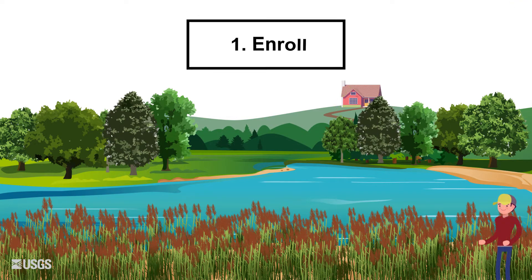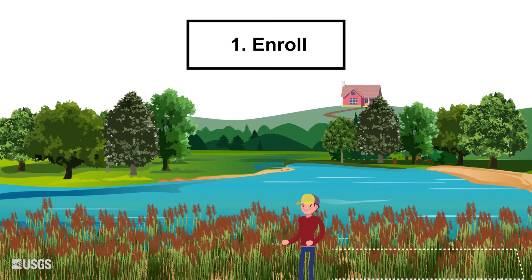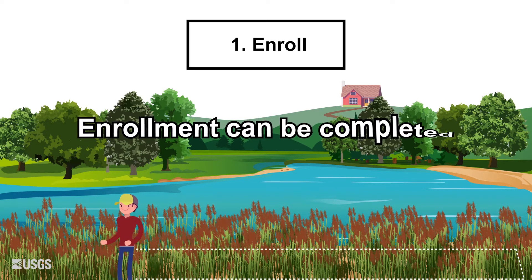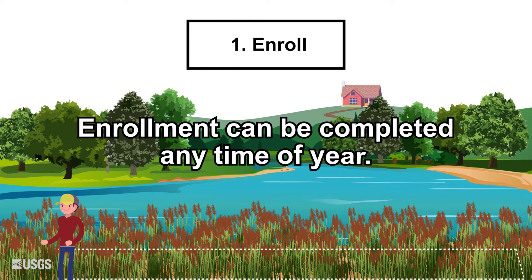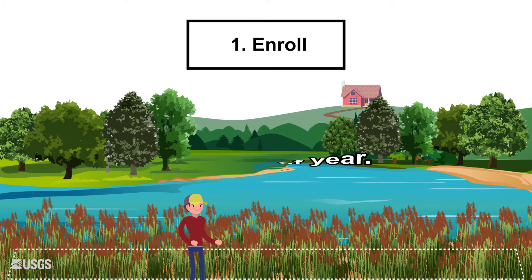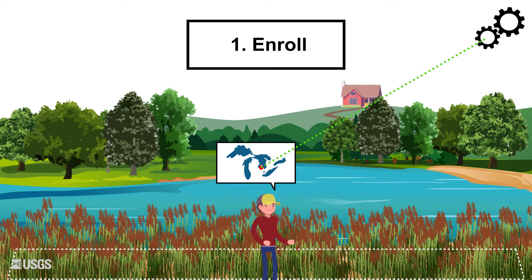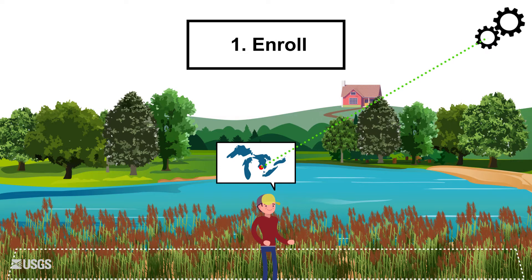First, you will enroll management units — the areas in which you will monitor and manage Phragmites. Enrollment can be completed any time of year by mapping the area to be managed and answering a few questions on the Web Hub. Each management unit is only enrolled once; however, you can enroll new units each year.